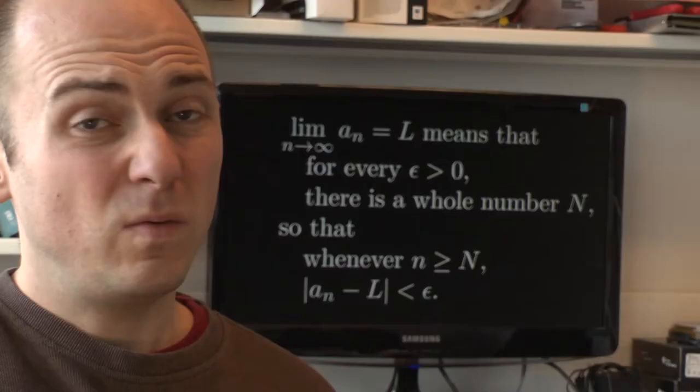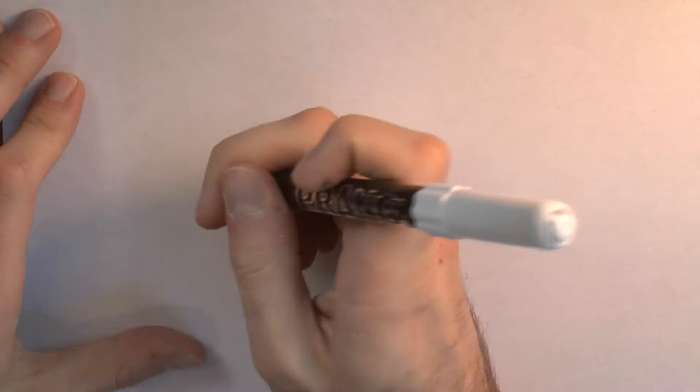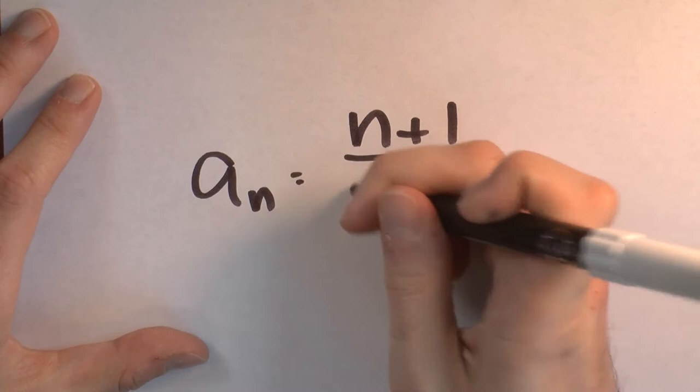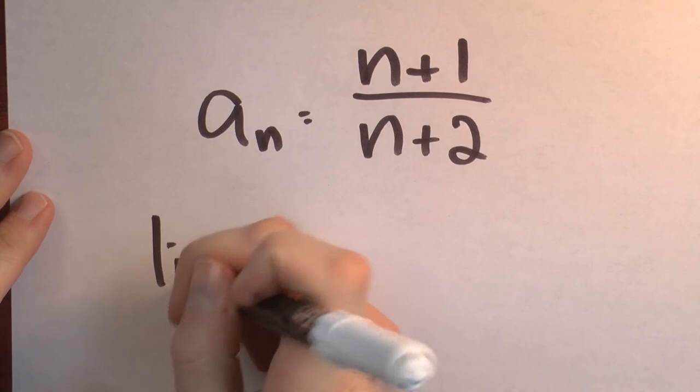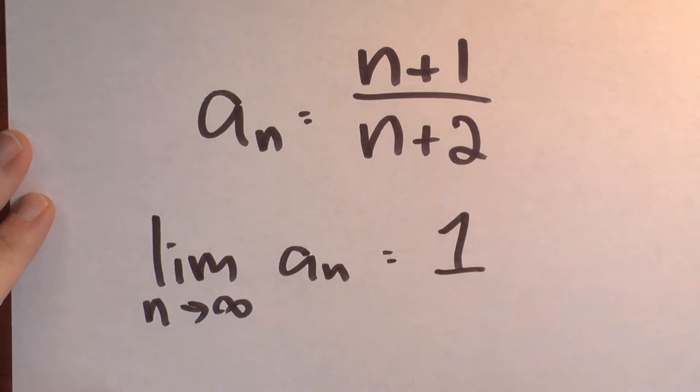We can actually compute this in some cases. Consider the sequence a sub n equals (n+1) divided by (n+2). So what's the limit? The limit of this sequence as n approaches infinity is 1.